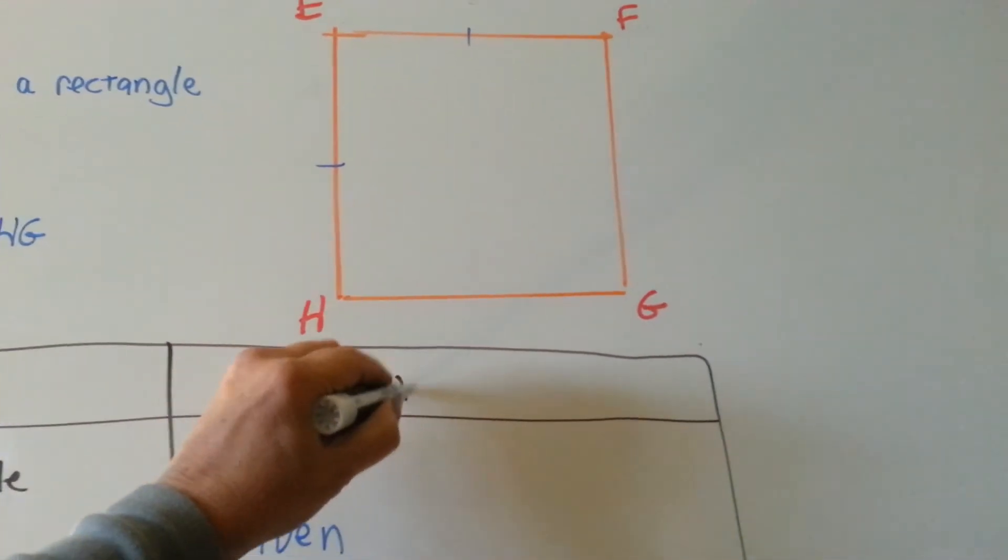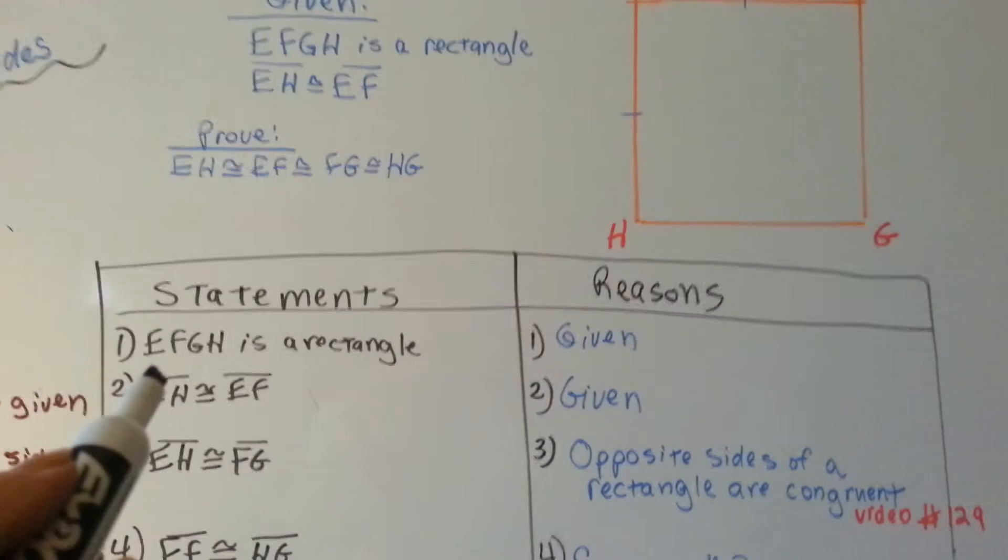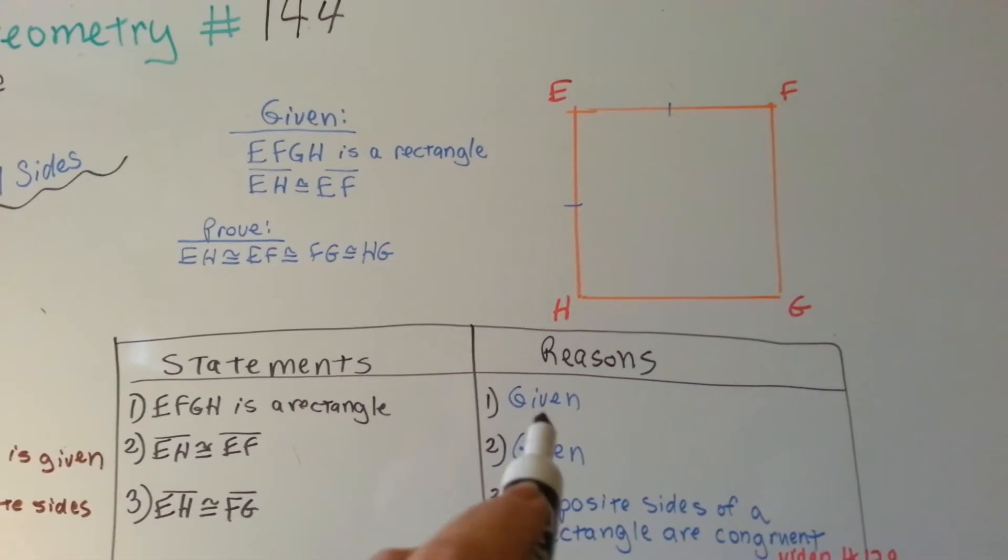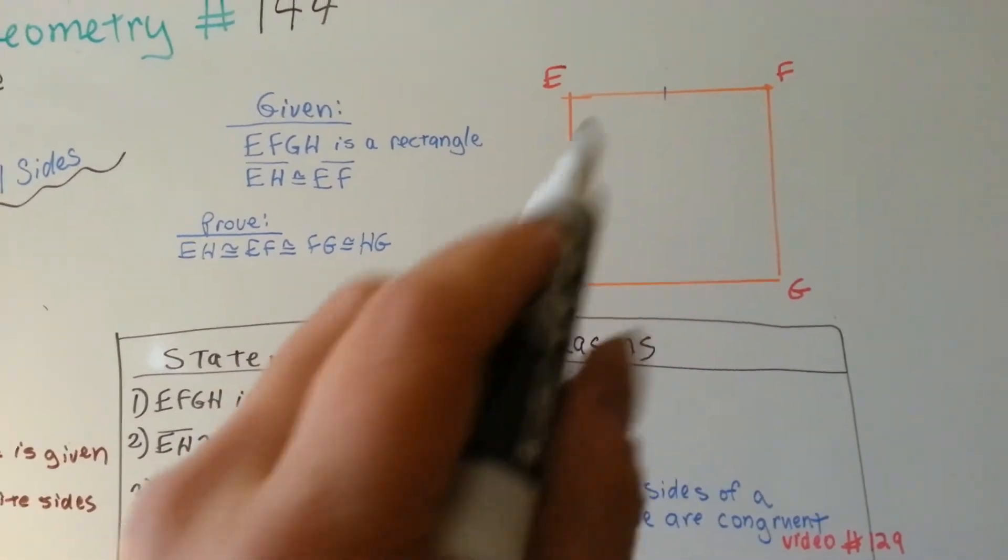Let's get this in here. Alright, so, our first statement is that EFGH is a rectangle, and that's given. And that EH is congruent to EF, and that's given.